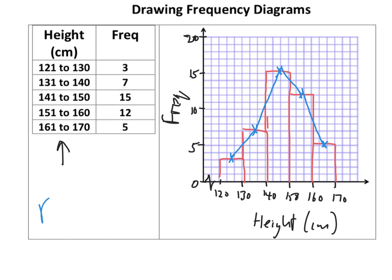Either one of those, the blue one is a frequency polygon and that's the more common one. But the red one is a frequency diagram which is perfectly valid as well.